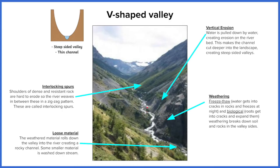There are other erosional processes happening as well. We've got weathering — freeze-thaw and biological — which we'll come on to in another lesson. Freeze-thaw is effectively water getting into cracks and freezing, which weakens the rock. Biological weathering would be more around the roots of trees and plants getting into cracks and breaking them up. This means that chunks of rock, pebbles, and stones end up loose and inside the river channel itself. You can see some evidence of that here.